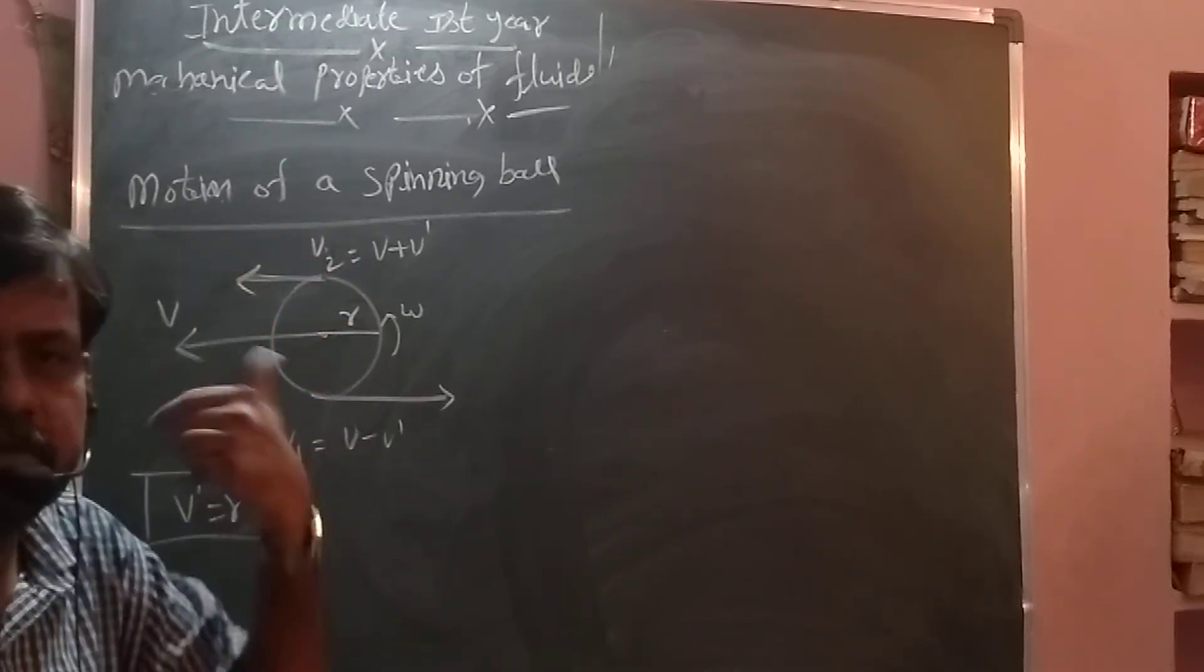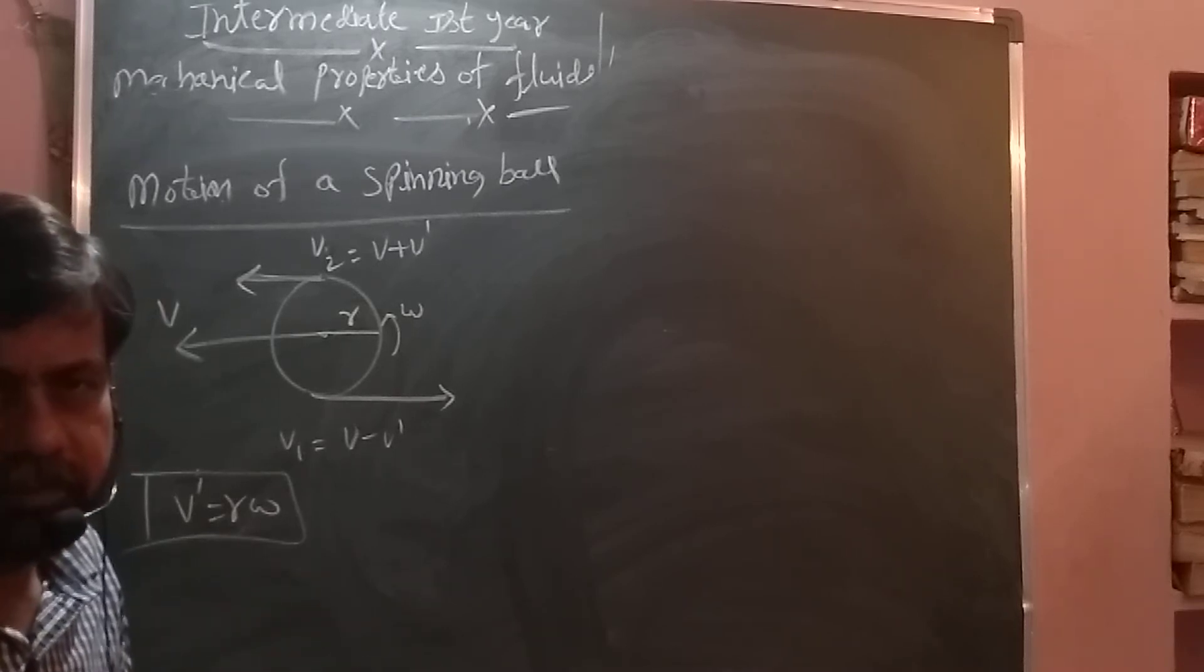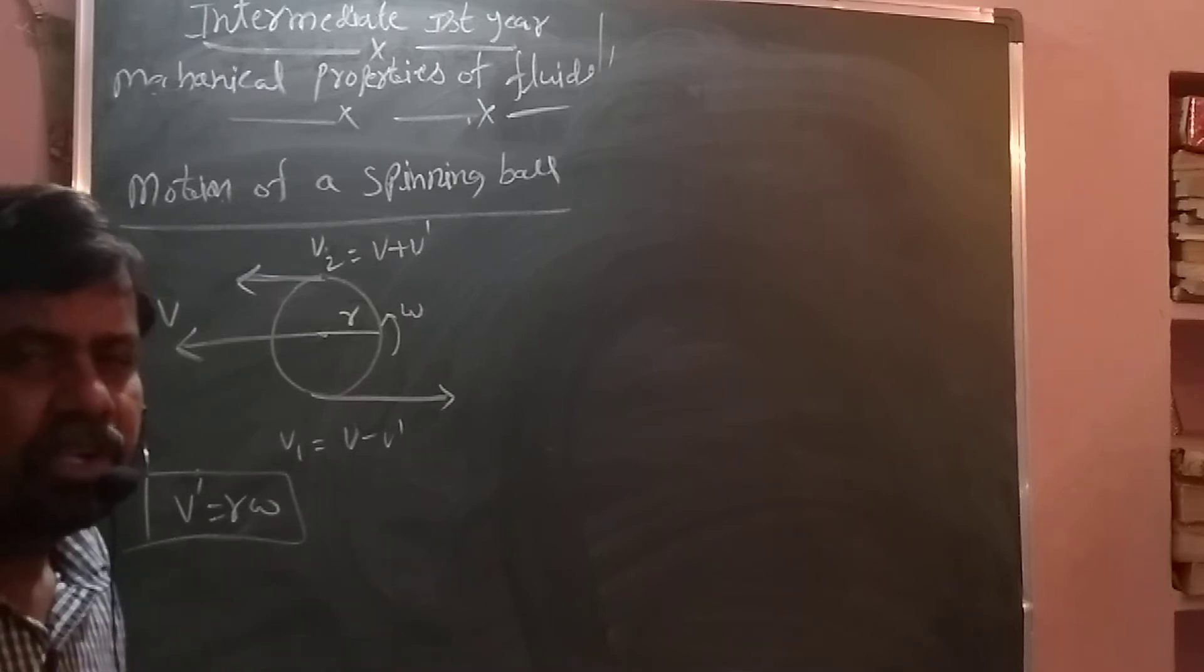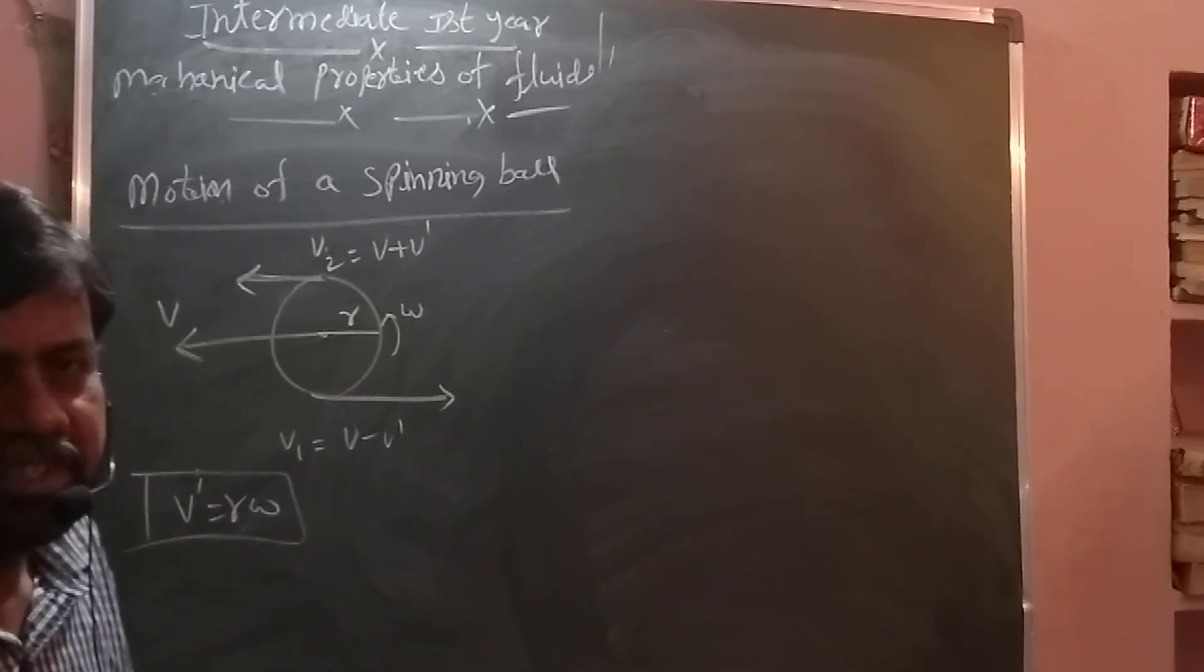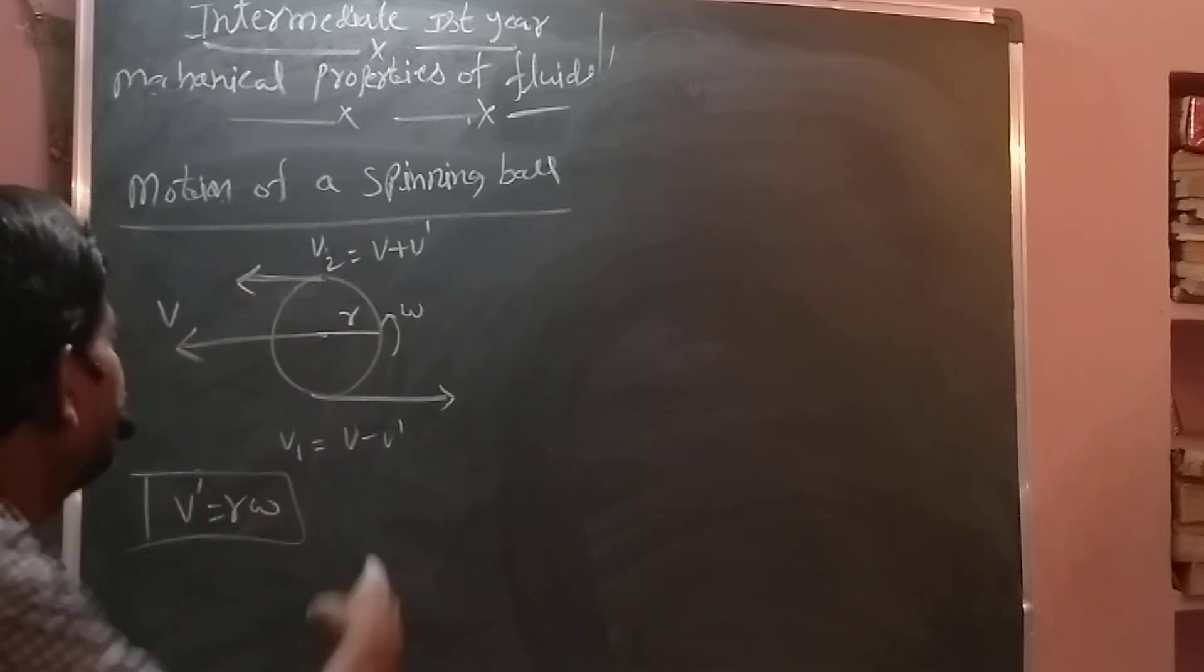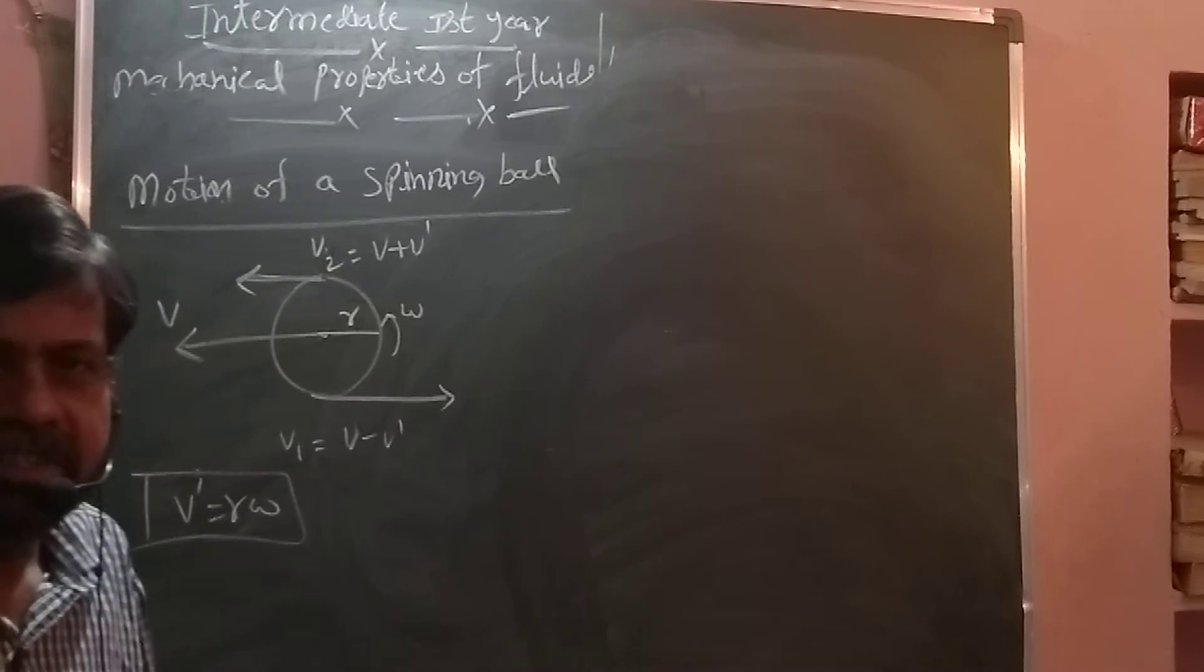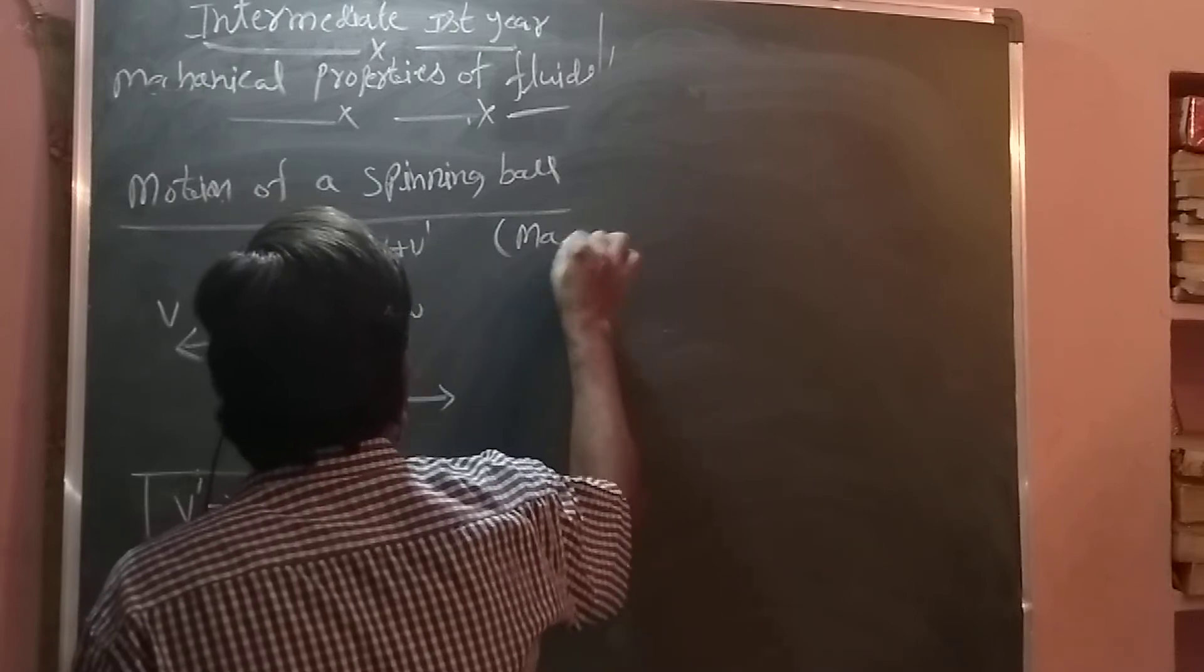So if less and more velocity is creating, according to Bernoulli's theorem, if velocity is less, definitely pressure more. So due to that, what happens? Upwards some force exertion. That is a dynamic lift. Simultaneously it is dragging. Due to this different velocities in the top and bottom, that is called Magnus effect.